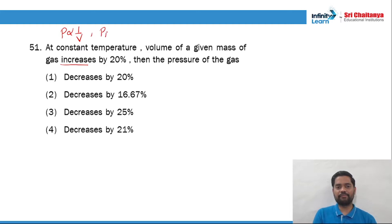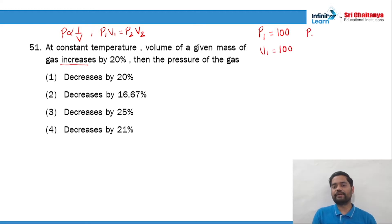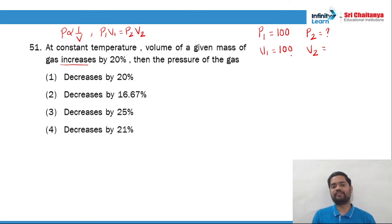Boyle's law also says that P1V1 is equal to P2V2, and what we need to calculate is the pressure of the gas — and that too in percentage, what percentage it has been decreased. So let us consider P1, the initial pressure, as 100 and the initial volume as 100. We don't know the final pressure P2, but we know the final volume — that is a 20% increase, so 100 plus 20 equals 120.